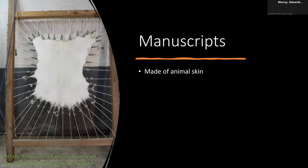What are manuscripts made of? They're made of animal skin. You would have a sheepskin, goatskin, or calfskin, and to make it into nice smooth parchment or vellum, you would scrape it and soak it in a disgusting mixture involving lime and urine, then stretch it on a rack. When it had been prepared and was ready to be made into a book, you'd take it down, cut it to the appropriate size, and fold it.